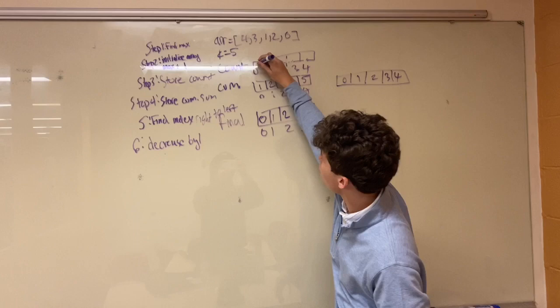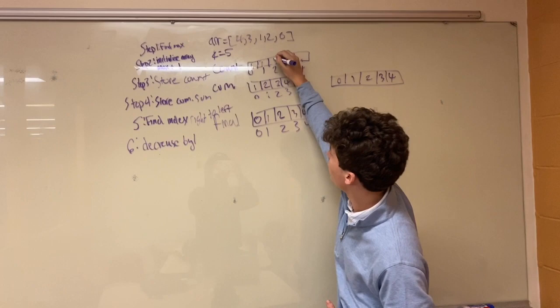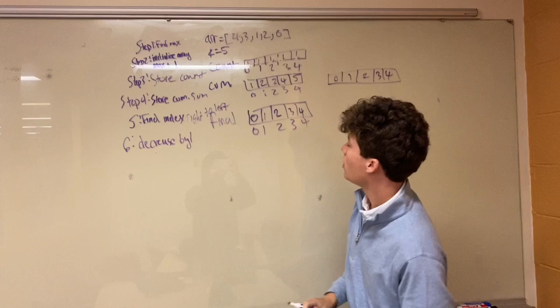1, we look in our original array, we have 1 value, 1. 2, 1. 3, 1. 4, 1. So that's our new count array, and then we go to step 3.